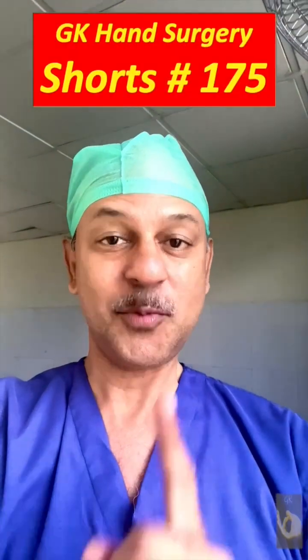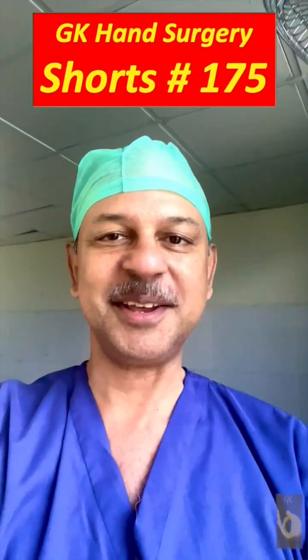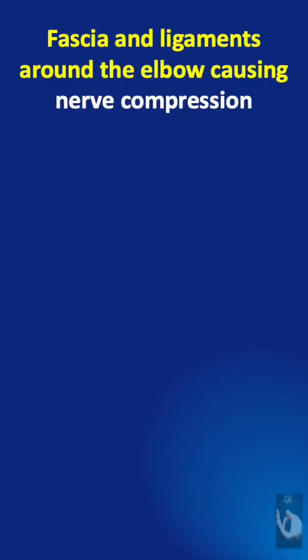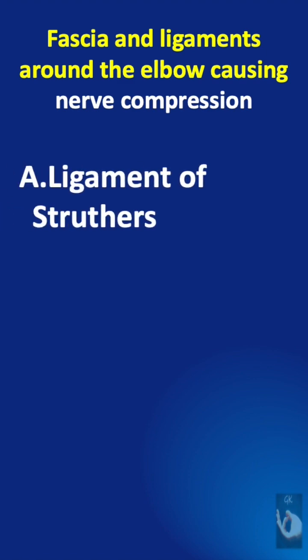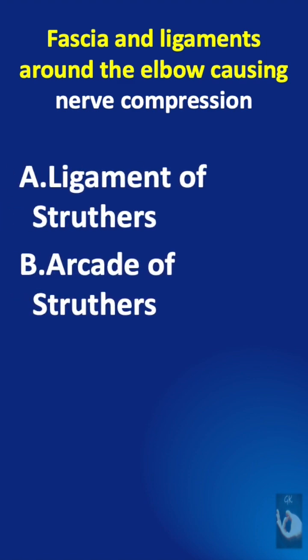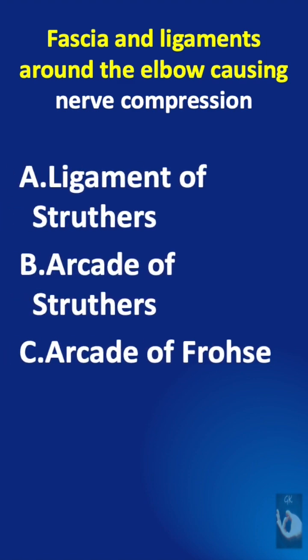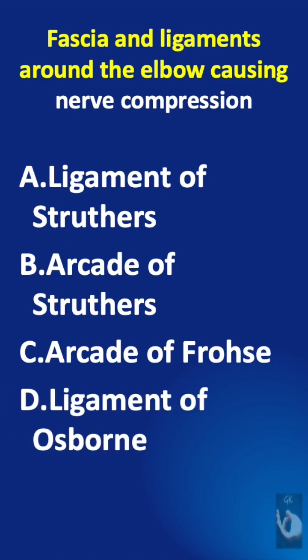Learning hand surgery one point at a time. The fascia and ligaments around the elbow causing nerve compression are the ligament of Struthers, the arcade of Struthers, the arcade of Frohse, and the ligament of Osborne.